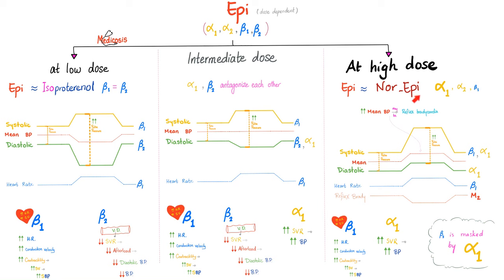At high dose, epinephrine acts just like norepinephrine — refer to that graph. At intermediate dose, epinephrine has some alpha 1 and beta 2, and they oppose each other. Alpha 1 tries to increase diastolic blood pressure, but beta 2 dilates vessels and wins that battle. Alpha 1 constricts veins, increasing preload, increasing systolic blood pressure, and beta 1 also increases systolic. End result: systolic has increased, diastolic has decreased, mean blood pressure remains the same. Heart rate can increase from beta 1, but there's no reflex bradycardia or tachycardia since the mean did not change.